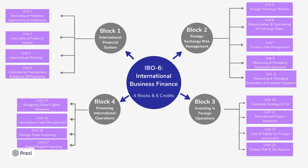Block 3 is investing in foreign operations. And finally, in Block 4, we have global capital structure. Internationally, we are doing cash management, then foreign trade financing — that is the project export financing — which we will discuss here. So, you will cover all these things in this whole subject.